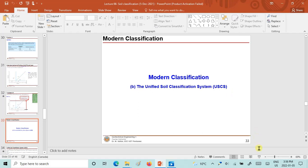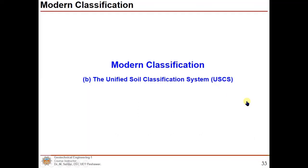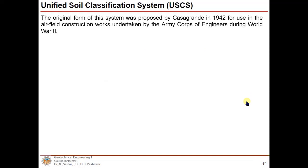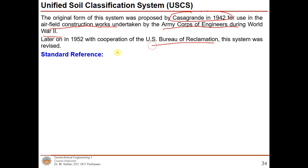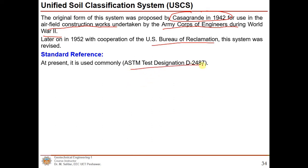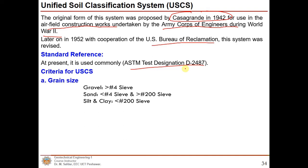Now in today's lecture we are going to focus on and learn about the Unified Soil Classification System. The original form of this system was proposed by Casagrande in 1942 for use in airfield construction undertaken by the Army Corps of Engineers during World War II. Later in 1952, with the cooperation of the U.S. Bureau of Reclamation, this system was revised. The standard reference is ASTM test designation D2487.